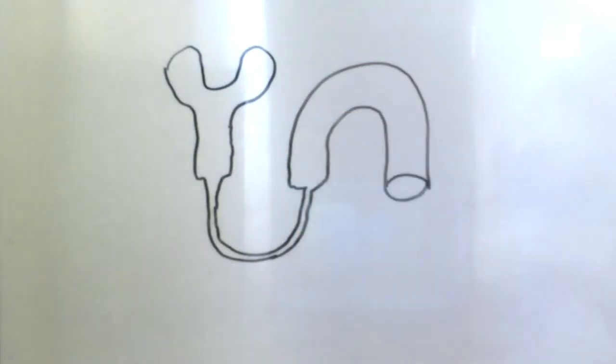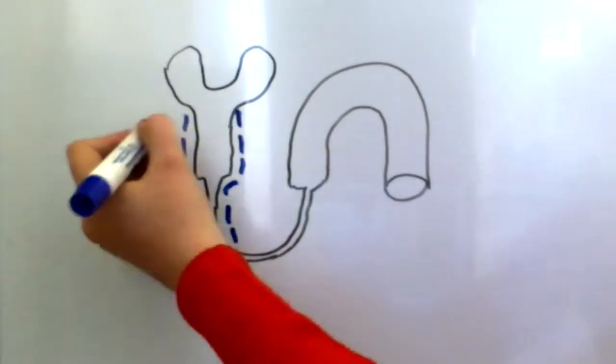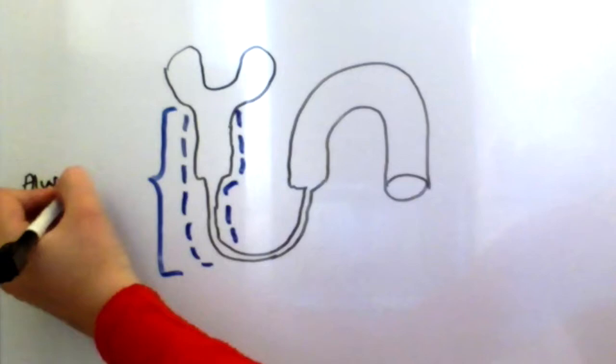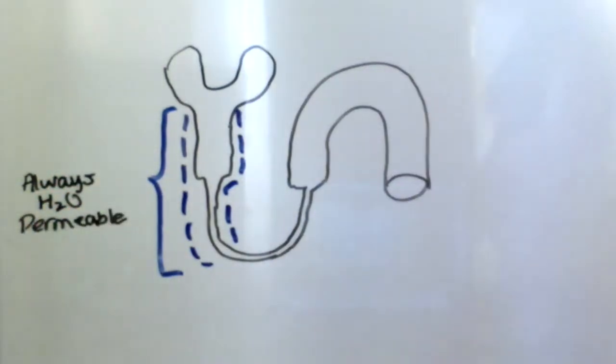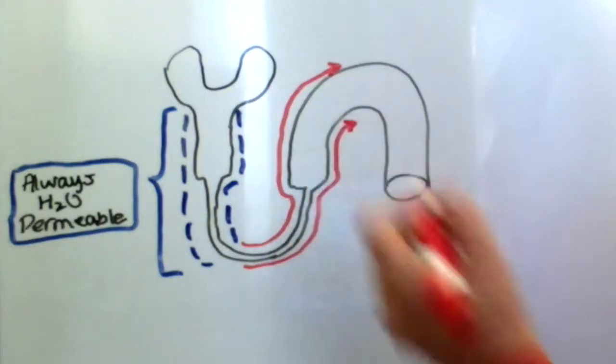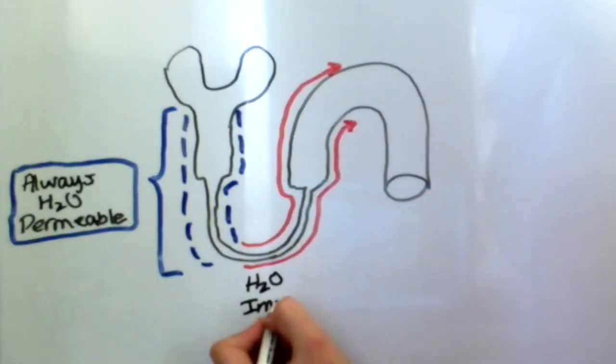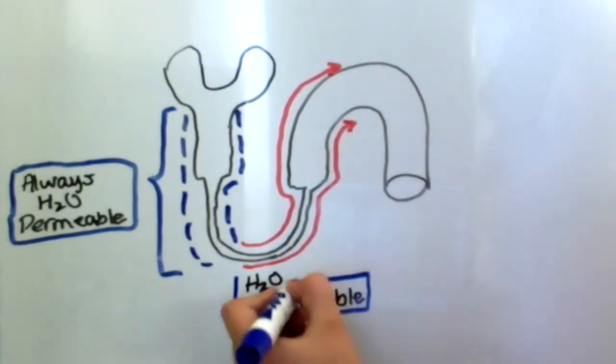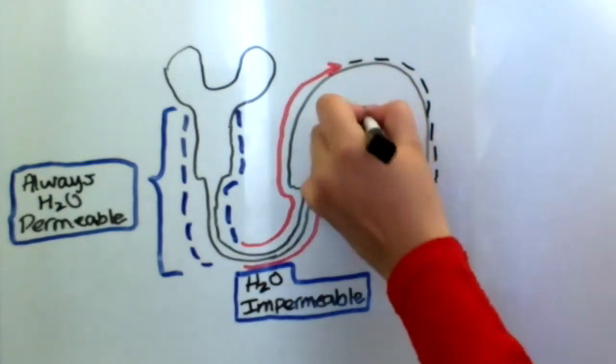So let's take a quick overview of the nephron. The proximal convoluted tubule and the descending loop of Henle are always water permeable. The ascending loop of Henle and part of the distal convoluted tubule are always water impermeable.